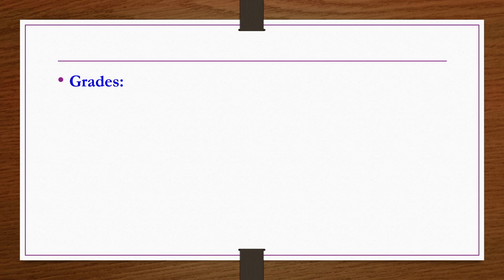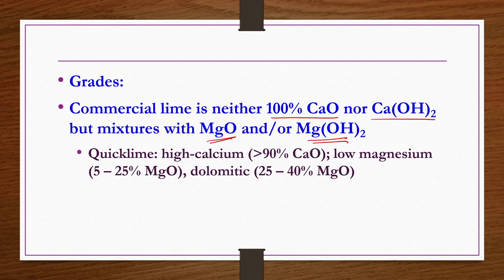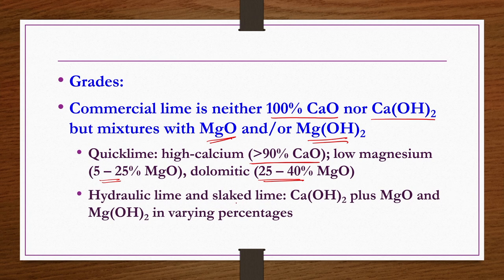Whether quick lime or hydrated lime, it is not available in 100 percent pure form commercially. Commercial lime is neither 100 percent CaO nor 100 percent calcium hydroxide, but a mixture with magnesium oxide and/or magnesium hydroxide. Quick lime: if it is high calcium type then more than 90 percent CaO would be there; low magnesium type then 5 to 25 percent magnesium oxide; dolomitic type 25 to 40 percent magnesium oxide. Hydraulic lime or slaked lime is calcium hydroxide plus magnesium oxide and magnesium hydroxide in varying percentages.